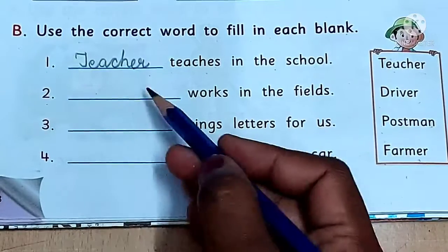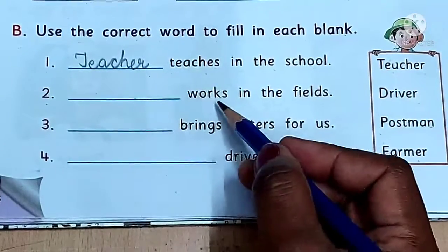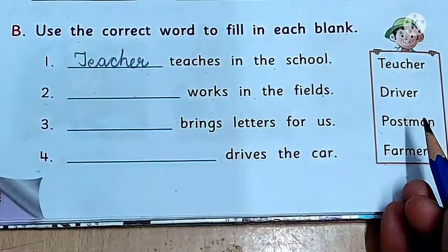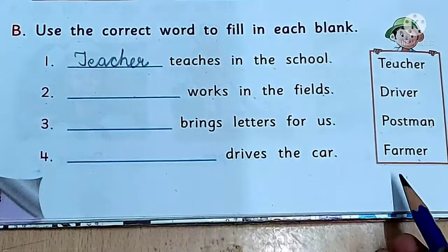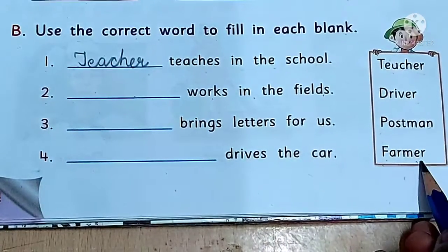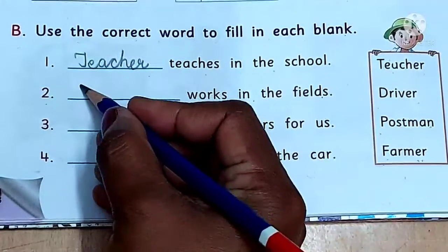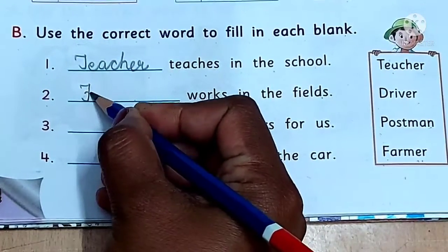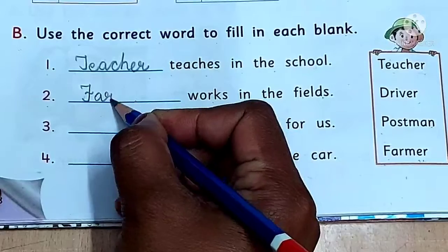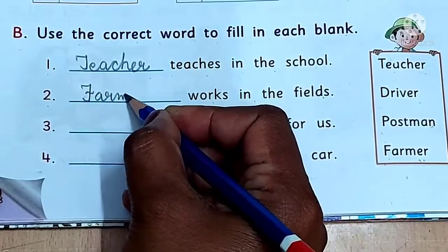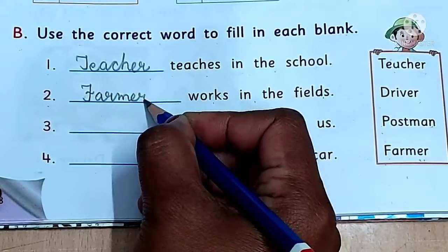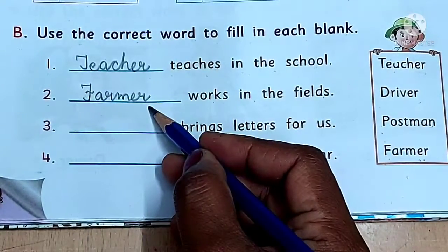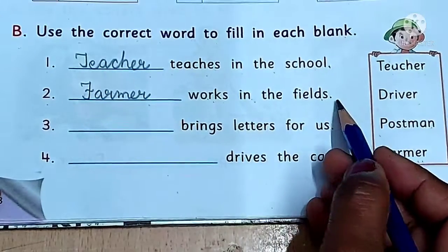Number two: blank works in the fields. Who works in the fields? Farmer. We will write here farmer — F-A-R-M-E-R. Farmer works in the fields.